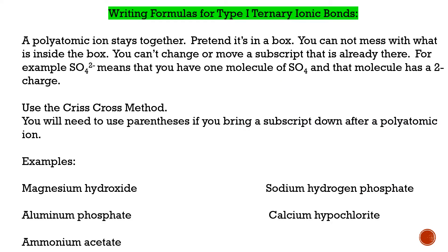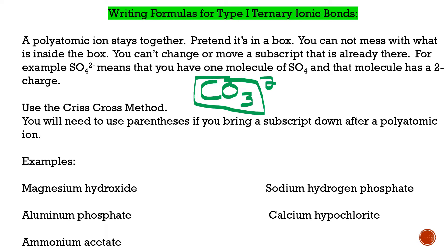Let's talk about writing formulas for Type 1 ternary ionic bonds. A polyatomic ion stays together — pretend it's in a box. For example, if we look at carbonate, which is CO3, that means in this polyatomic ion we have one carbon and three oxygens. The entire thing has a charge of 2−. You cannot mess with a subscript that's already there. If you take that three away or try to change it, it's no longer carbonate.